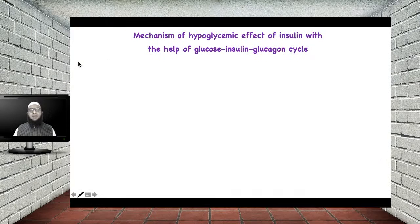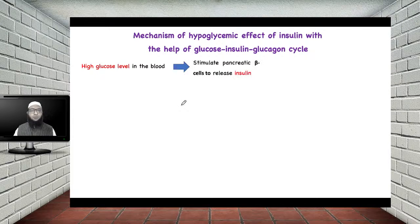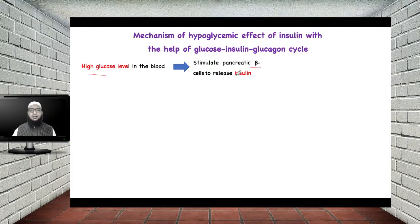Now let us see the mechanism of the hypoglycemic effect of insulin with the help of the glucose-insulin-glucagon cycle. Whenever there is high glucose level in the blood — that is called hyperglycemia — in response to hyperglycemia there is stimulation of pancreatic beta cells. This stimulation of beta cells of the pancreas leads to release of insulin from these beta cells.